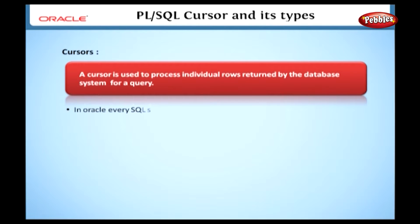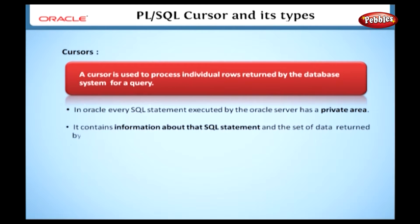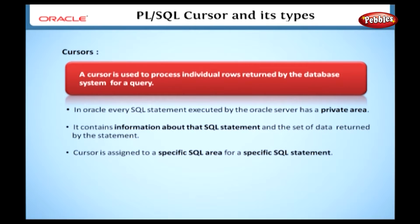Generally in Oracle, every SQL statement executed by the Oracle server has a private area. This area contains information about that SQL statement and the set of data returned by the statement. In PL-SQL, a cursor is assigned a specific SQL area for a specific SQL statement. If you create a cursor for a SELECT statement, the server allocates a specific area for that statement, and the result is stored in that particular area.